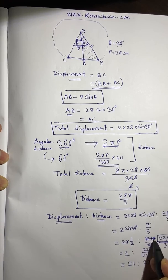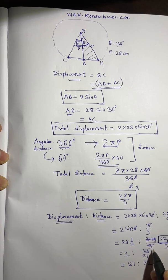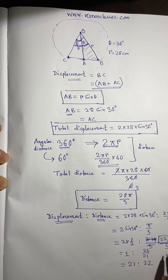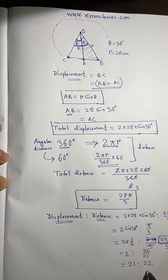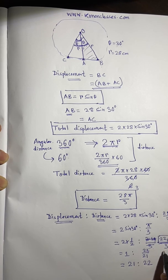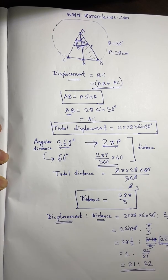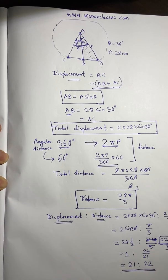You can use π as 22/7, 3, or 3.14, but since we are asked for a ratio, using 22/7 is most convenient. Therefore, the ratio of displacement to distance is 21:22.